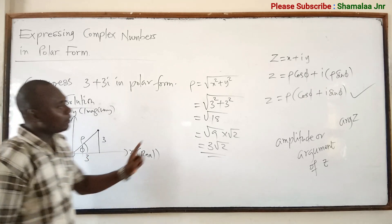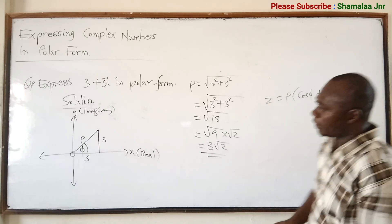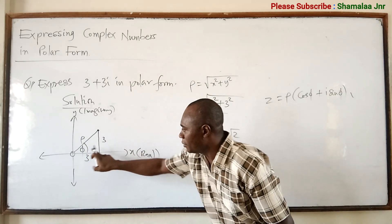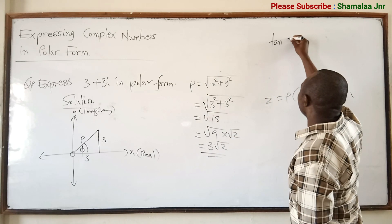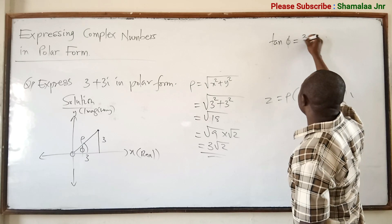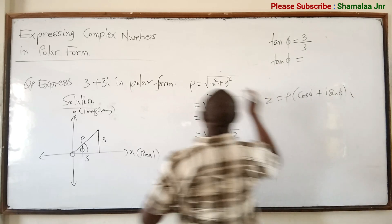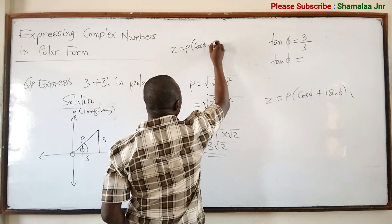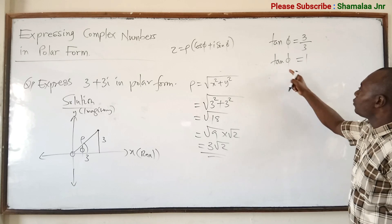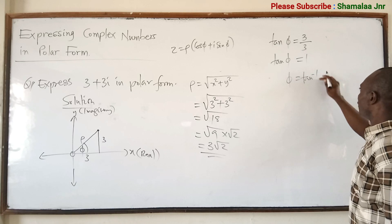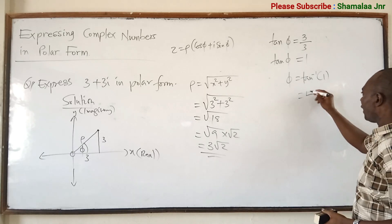Now to get the angle phi, we can use tan. Tan phi equals opposite over adjacent. From the diagram, tan phi equals 3 over 3, which equals 1. So to get phi: phi equals tan inverse of 1, and that is 45 degrees.